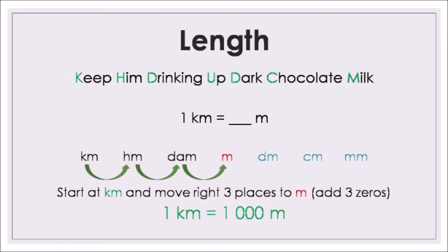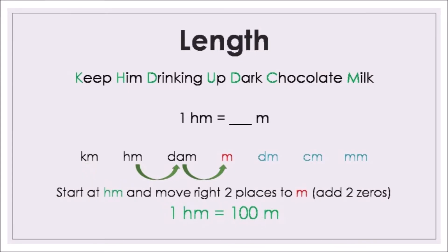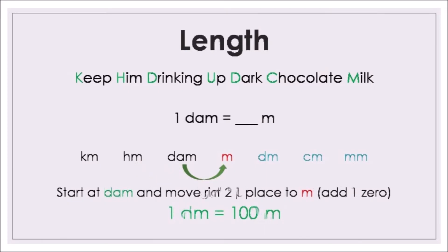Keep him drinking up dark chocolate milk. One kilometre is how many metres? Go to kilometre and move three places to the right — multiply by 1,000 or move the decimal point three places to the right. So one kilometre is 1,000 metres. One hectometre is how many metres? Move two places to the right, multiply by 100. One hectometre is 100 metres.